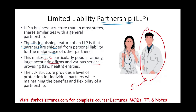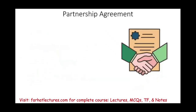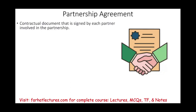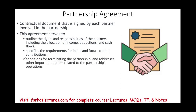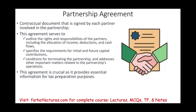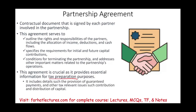The LLP provides a level of protection for individual partners while maintaining the benefits and flexibility of a partnership. You can have a partnership agreement — you don't have to, but you should. It's a contractual document signed by each member involved in a partnership that outlines the rights and responsibilities of the partners, including how to allocate income, deductions, and cash flows; requirements for initial contributions; conditions for terminating the partnership; and other important matters. This agreement is also crucial for tax preparation purposes, including specially guaranteed payments and other tax-relevant issues such as contribution and distribution of capital.